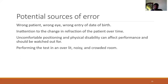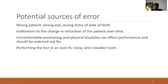Potential sources of error during perimetry include wrong patient data entry — if the wrong eye is entered, blind spot charting will go wrong and reliability indices will be incorrect. Wrong date of birth means the normative data used for comparison is wrong. Wrong refraction entry causes a generalized depression. Uncomfortable positioning or physical disability can lead to positional errors — the nose can introduce artifacts, and rim artifacts can appear. If the test is performed in an overly lit or noisy room, the patient may produce many false positive errors.